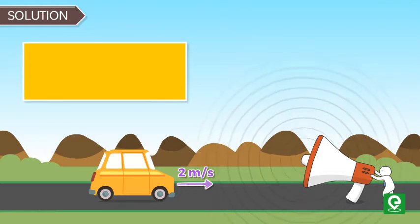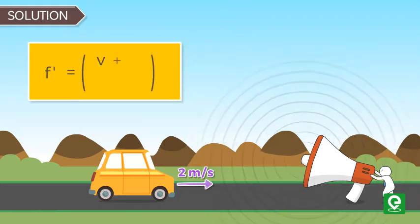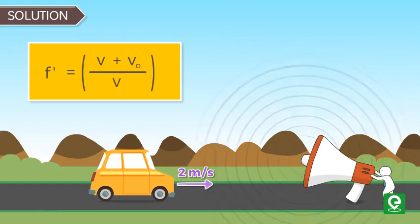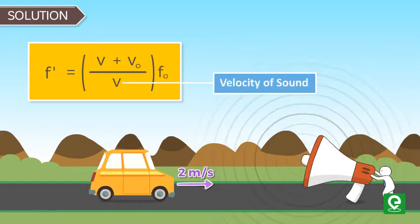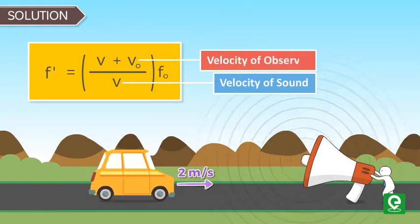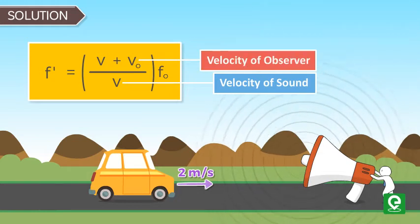we can find the value of apparent frequency f' = (v + v₀)/v × f₀, where v is the velocity of sound and v₀ is the velocity of observer, that is the car.